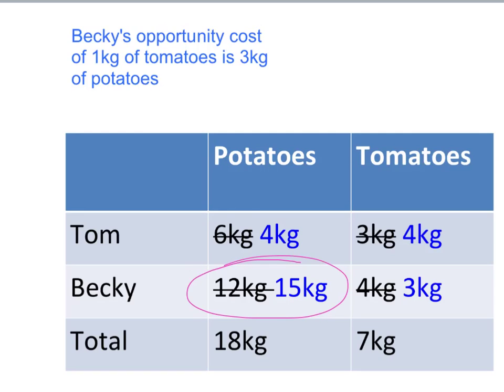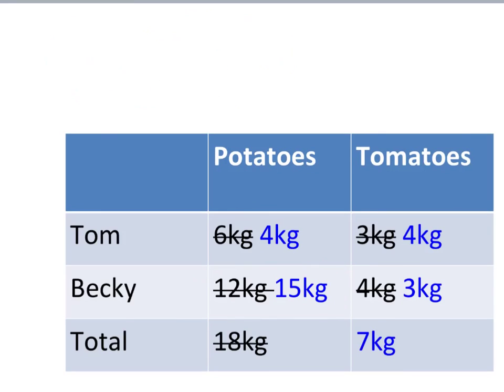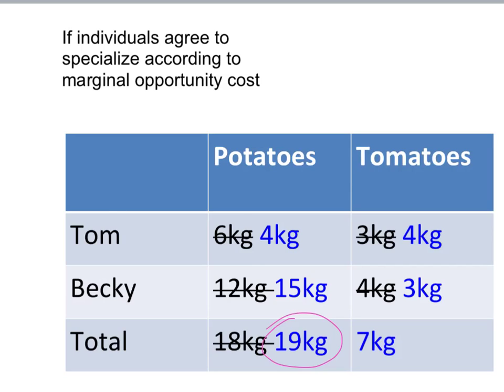Notice what is happening here: we're having specialisation at the margin, according to marginal opportunity cost. Tom's marginal opportunity cost of tomatoes is two kilograms of potatoes, while Becky's opportunity cost of tomatoes is three kilograms of potatoes. By specialising according to the lower marginal opportunity cost, we've kept tomato numbers the same but raised potato production by one kilogram. Total production is now seven kilograms of tomatoes and 19 kilograms of potatoes, whereas we only had 18 kilograms before specialisation. Tom and Becky can decide how to share this extra kilogram of potatoes.